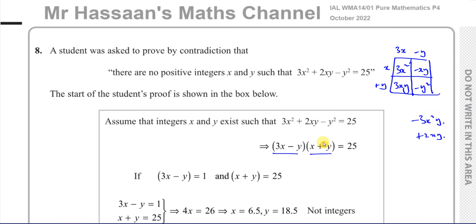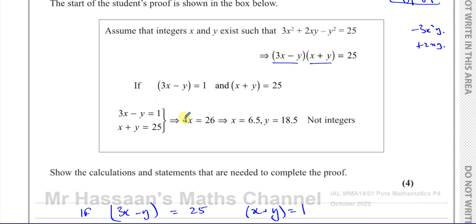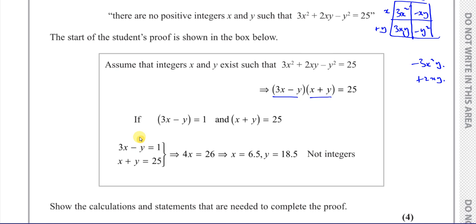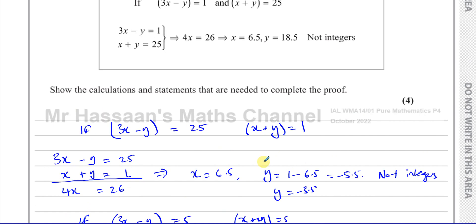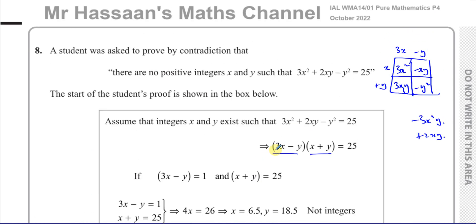So this is a question about proof by contradiction — a slightly different type where they've already started the proof for you. A lot of students didn't know what to do here; they didn't realize you have to carry on and look at all the different ways of getting 25, which were two more ways. These questions need more practice as it's a relatively new topic. Other questions from this paper and from proofs can be found in the playlists. Subscribe to the channel and thank you for watching.